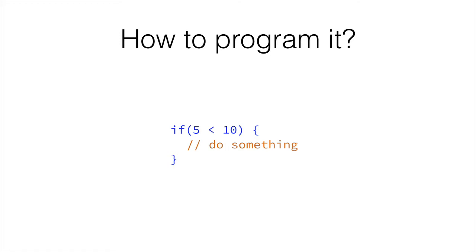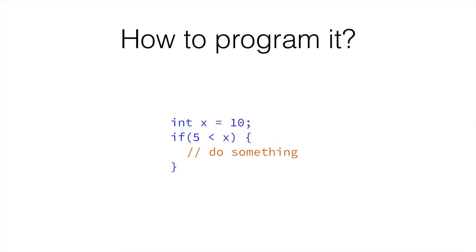We can change the 10 to be a variable instead of just a value. So, we create an integer variable called x, and then we substitute that for the 10. We could change the value of x, and depending on which value of x we choose, the if statement would execute or not. If we changed x to be 3 instead of 10, then 5 is not less than 3, so we wouldn't run whatever we had inside the if statement — anything inside the curly braces wouldn't run.